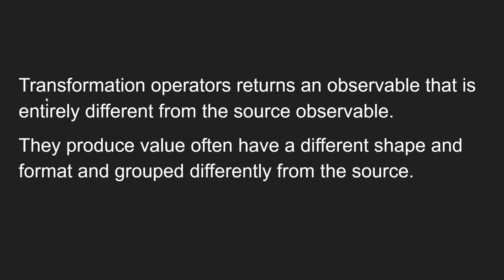Transformation operators return an observable that is entirely different from the source observable. Whatever the input observable, the output observable will be completely different — it will not be the same. They produce values that often have a different shape. The source observable might be an object, but the output could be an array or a number — a different shape, format, or grouping from the source.